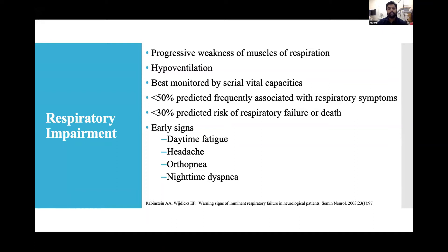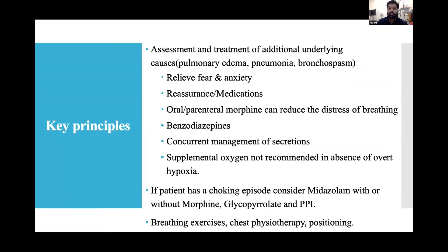Key principles for respiratory impairment management: assess and treat underlying causes such as pulmonary edema, pneumonia, and bronchospasm. Relieve fear and anxiety with reassurance. Use oral or parenteral morphine to reduce distress of breathing; benzodiazepines and secretion management concurrently. Supplemental oxygen is not recommended in the absence of overt hypoxia. For choking episodes, consider midazolam with or without morphine. Use glycopyrrolate, PPI, breathing exercises, chest physiotherapy, and positioning.